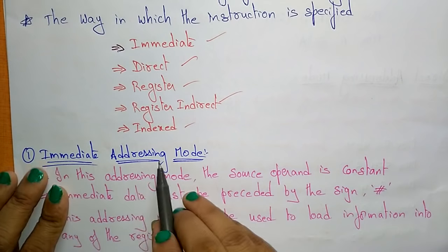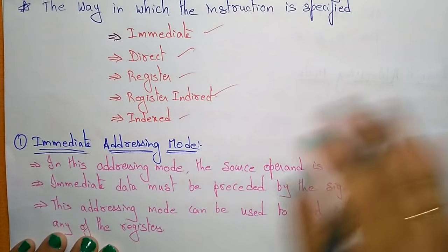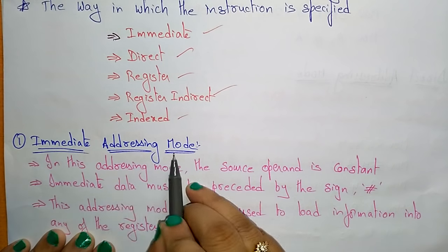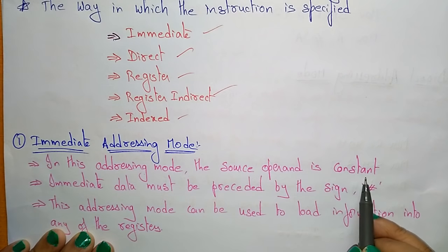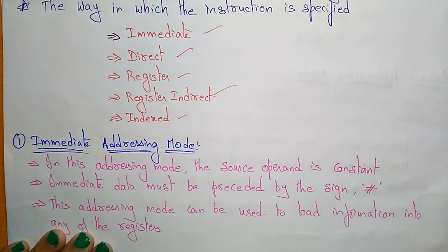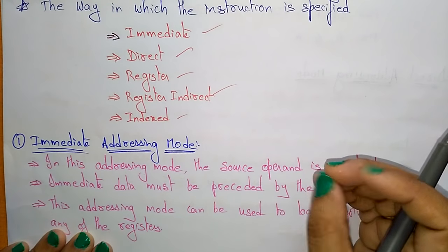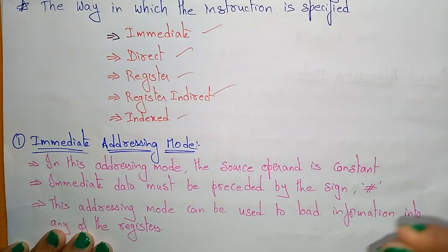The first one is the immediate addressing mode, just like in the 8086 and 8085 microprocessor, with a slight modification. In this addressing mode, the source operand is a constant — whatever source operand is there, the value we are giving is the immediate data. So the source operand is a constant, meaning it's just a value.